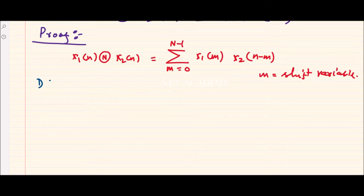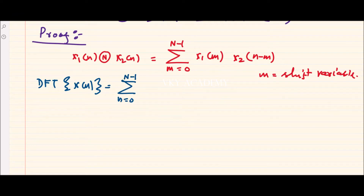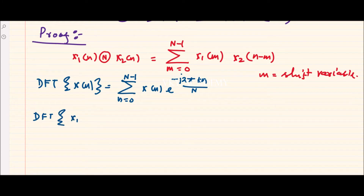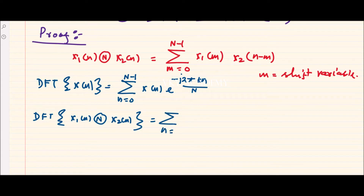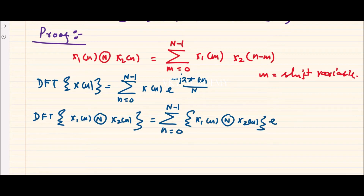Next we write down the formula for DFT. The DFT of any arbitrary sequence x(n) is equal to the summation from n equals 0 to N-1 of x(n) · e^(−j2πkn/N). Now applying this, x1(n) circular convolution x2(n) can be written as the summation from n equals 0 to N-1 of [x1(n) circular convolution x2(n)] · e^(−j2πkn/N).